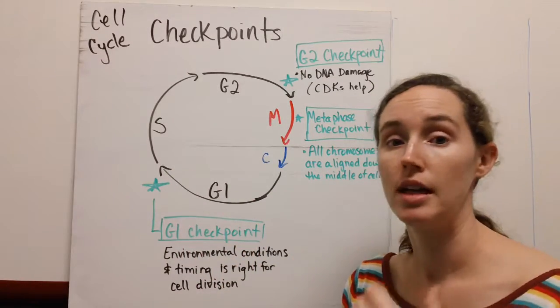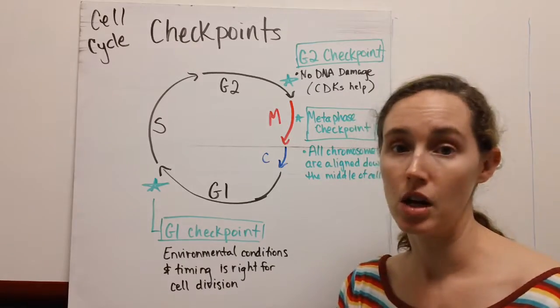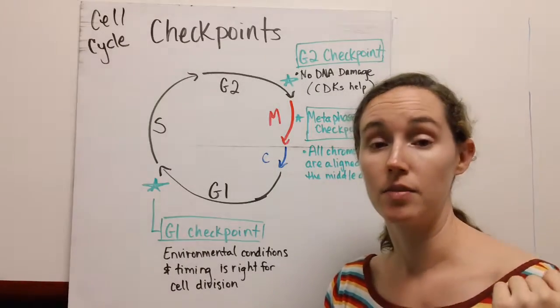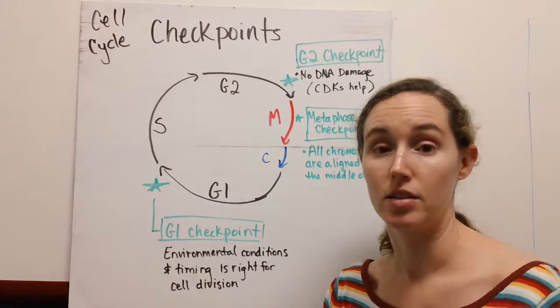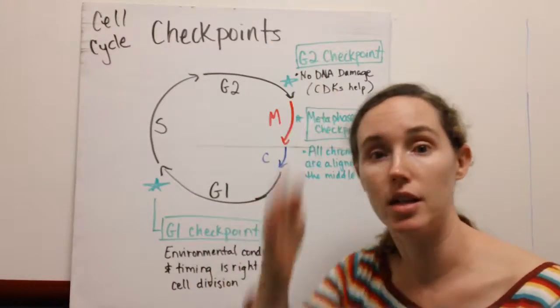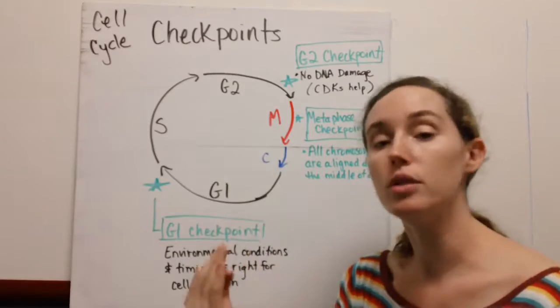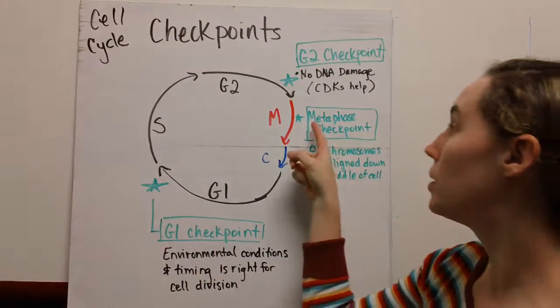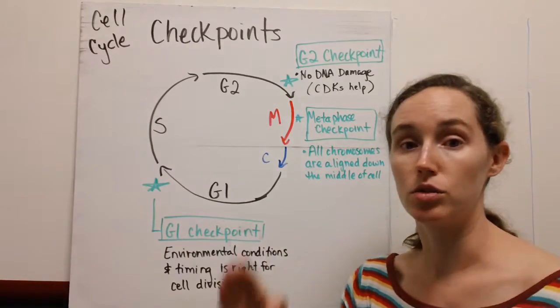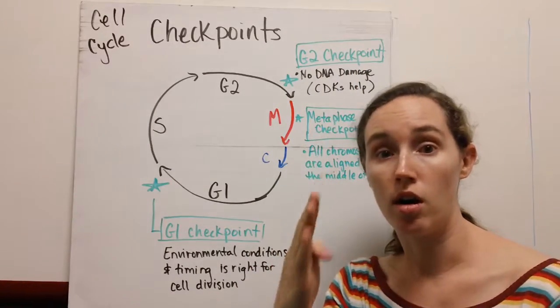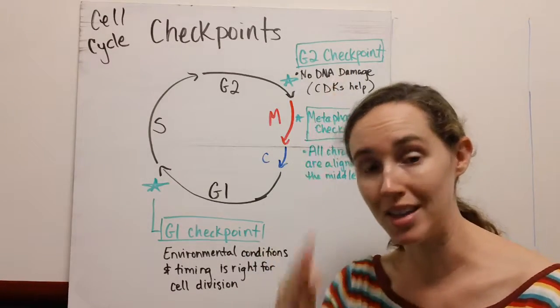Mitosis has a few phases. One of them is called metaphase or alignment, when your chromosomes are going to line up down the middle. There's a third checkpoint called the metaphase checkpoint, and this is when the cell just checks to be sure that all of the chromosomes are lined up down the middle.